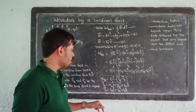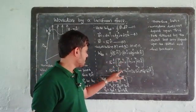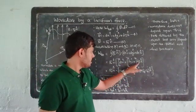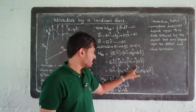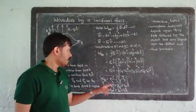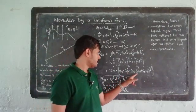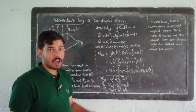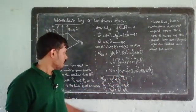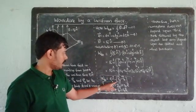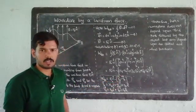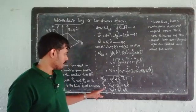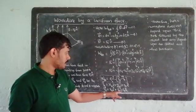So W_BA equals f₀ n-cap dot the integral, which gives (x_b minus x_a) i-cap plus (y_b minus y_a) j-cap plus (z_b minus z_a) k-cap. This simplifies to f₀ n-cap dot (vector r_b minus vector r_a). Where vector r_a equals x_a i-cap plus y_a j-cap plus z_a k-cap, and vector r_b equals x_b i-cap plus y_b j-cap plus z_b k-cap.